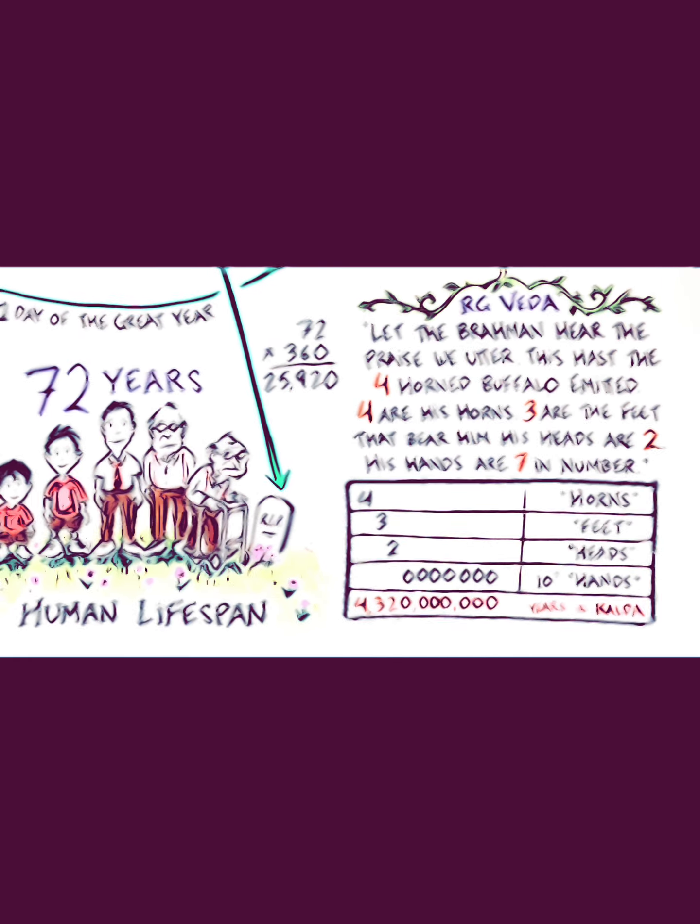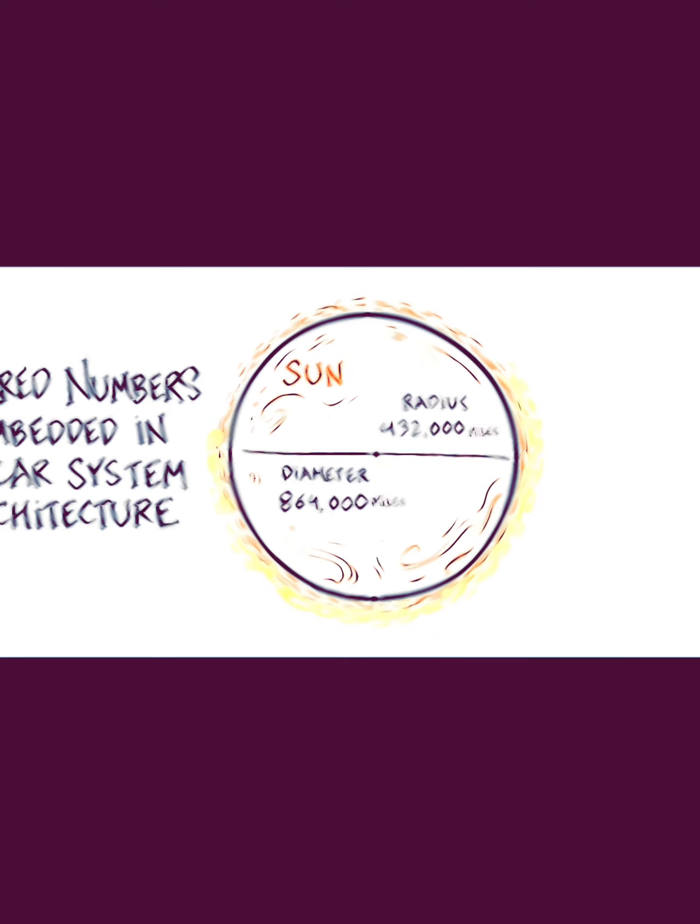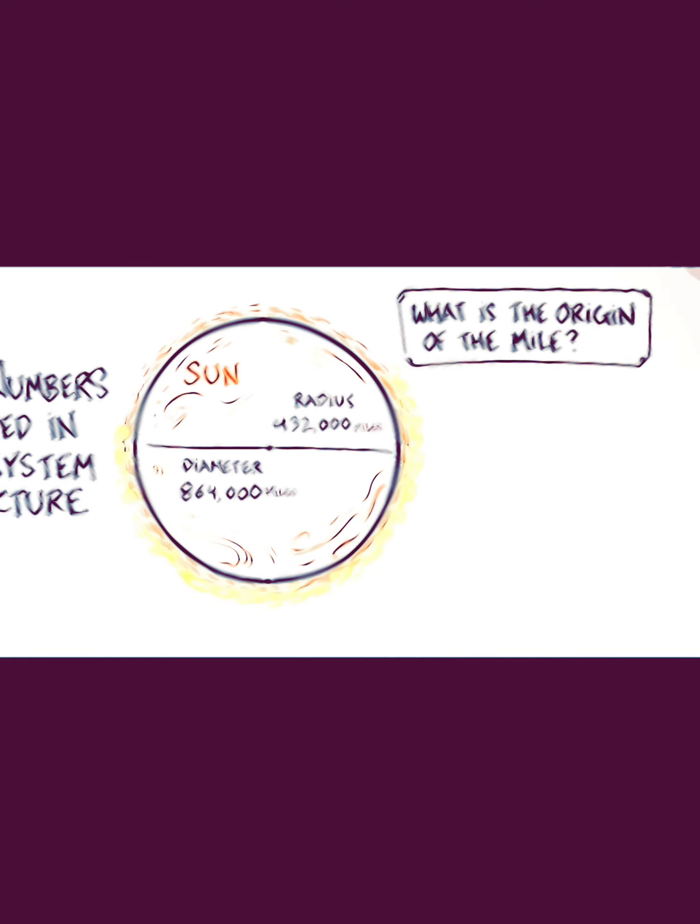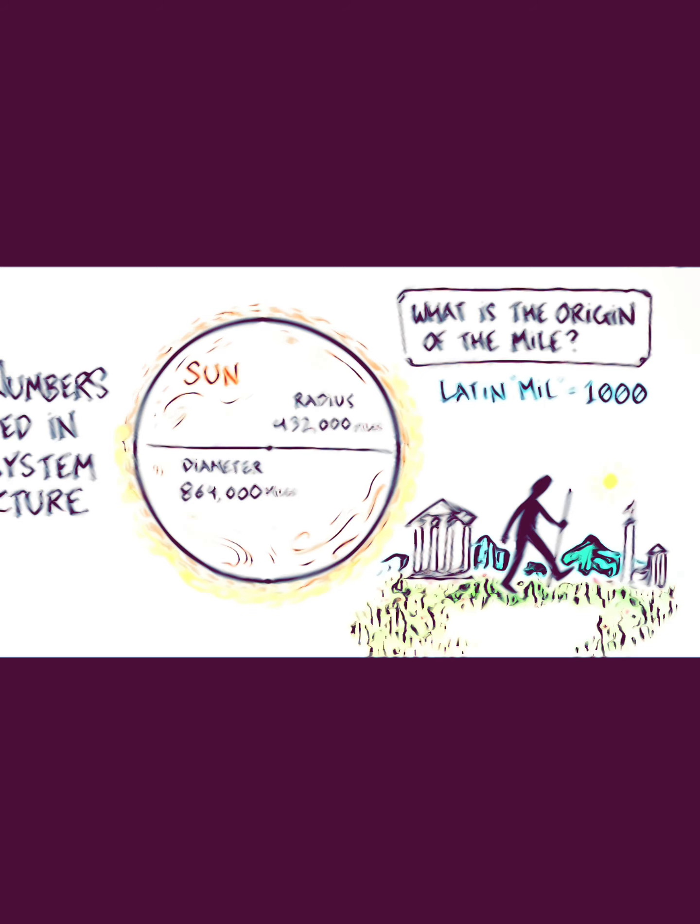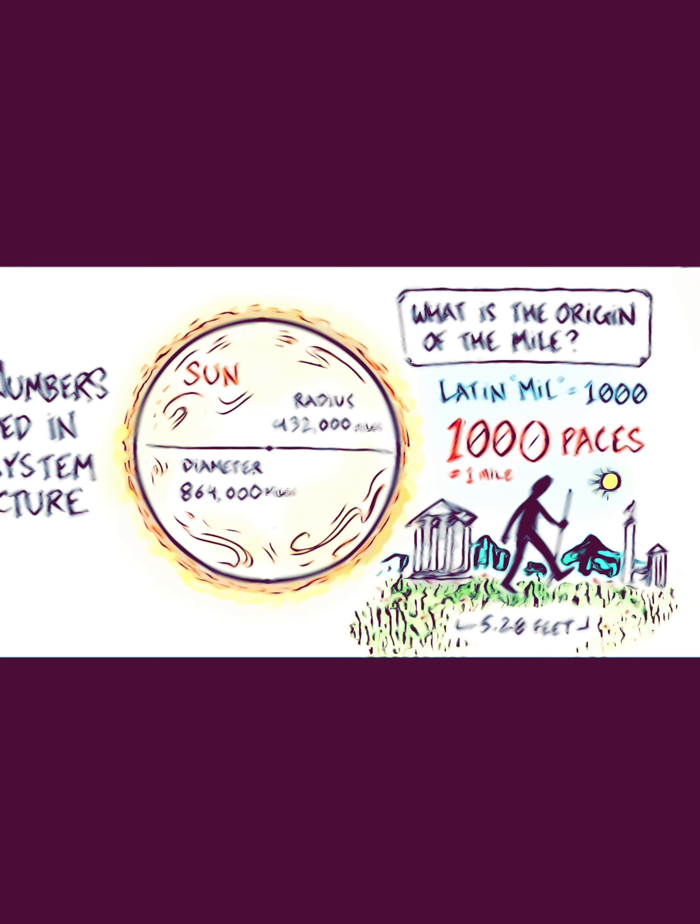We discover the Sun's radius is 432,000 miles, which means its diameter is 864,000 miles. We measure the Sun according to the human measure of miles. The origin of the mile comes from the Latin word 'mille,' meaning a thousand—a thousand paces, each pace averaging 5.28 feet in length.